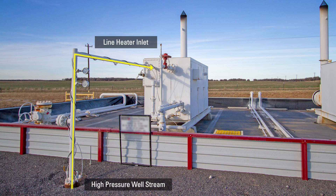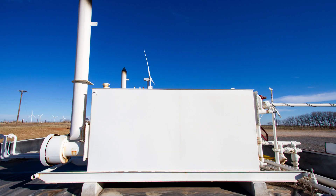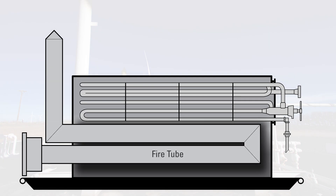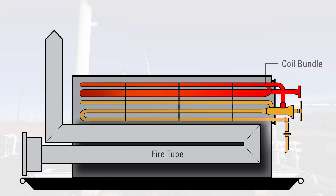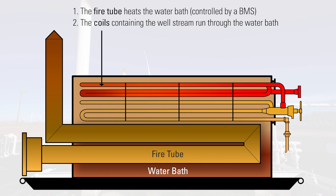The high-pressure well stream coming into the line heater of the GPU is heated to accommodate the large pressure drop that will take place. A line heater consists of a fire tube and two sets of coils inside a water bath. The fire tube, controlled by a burner management system, heats the water bath. The coils containing the well stream then run through the water bath, which heats up the well stream.